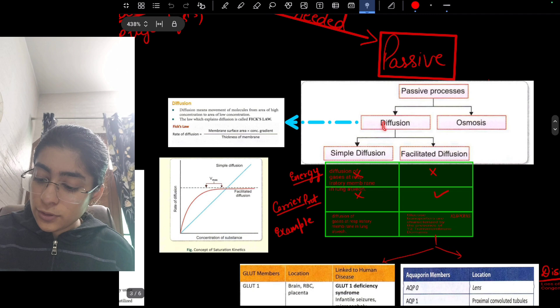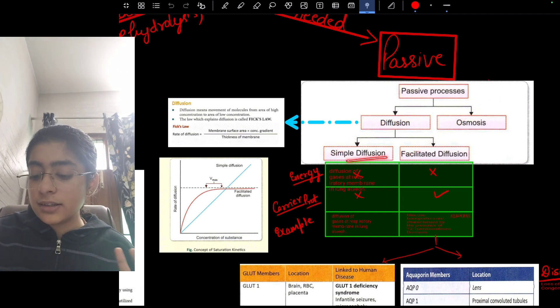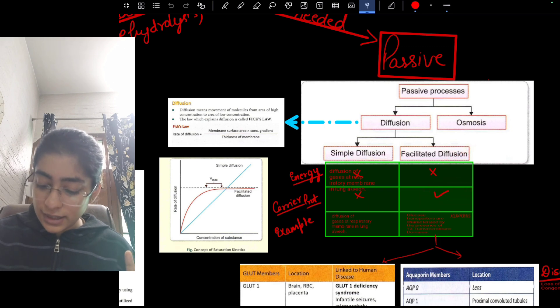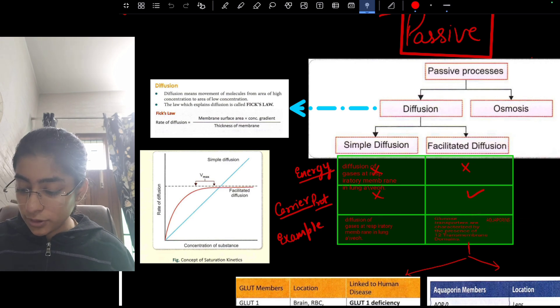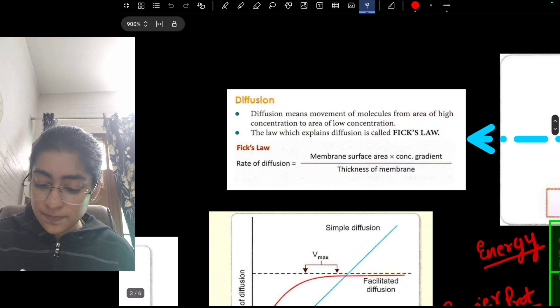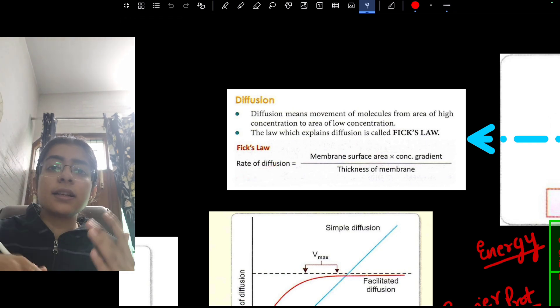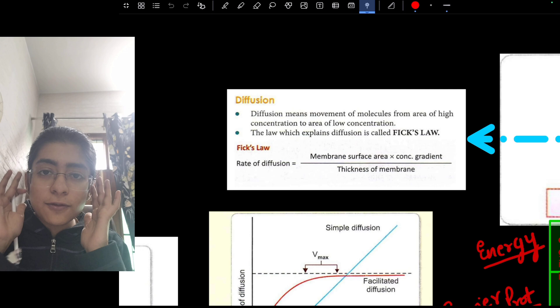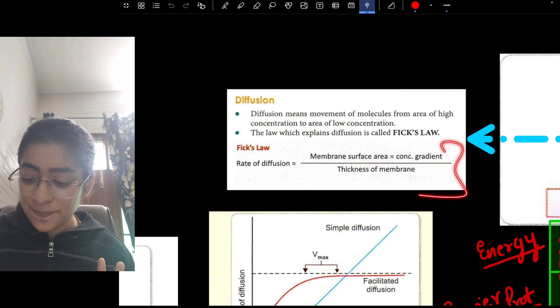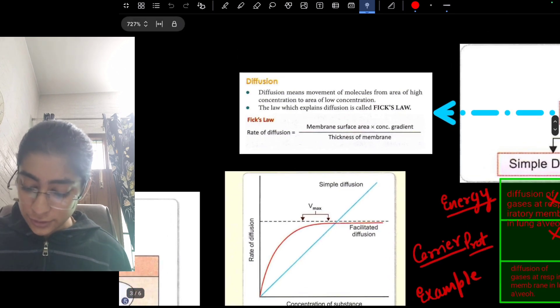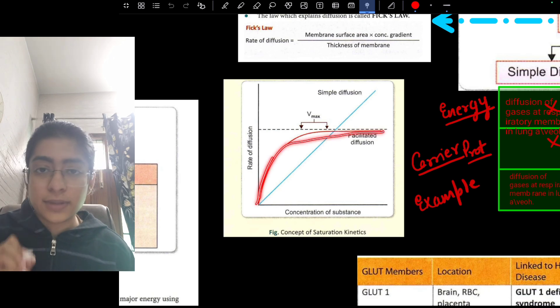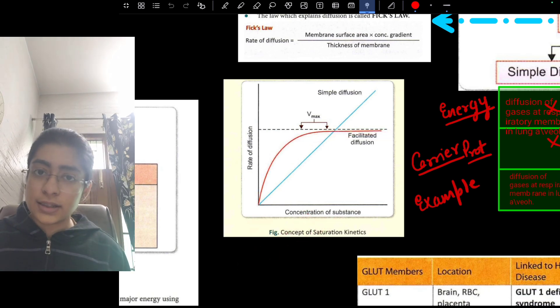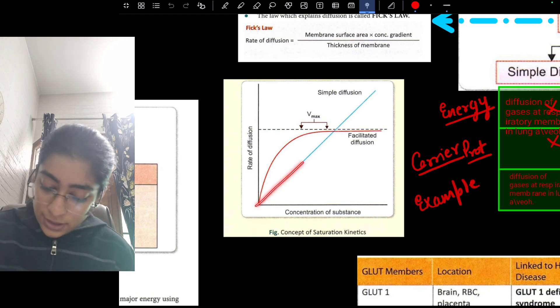In passive we are having diffusion and osmosis. Diffusion is simple and facilitated. Simple is without carrier and facilitated is with carrier. Example: diffusion of respiratory gases. And here we are having the aquaporins, glucose transporters. In diffusion we are having Fick's law. Rate of diffusion: if the thickness is more it will be fast or slow? From physics and chemistry we can remember this. This is the basic formula which you need to understand in Fick's law.